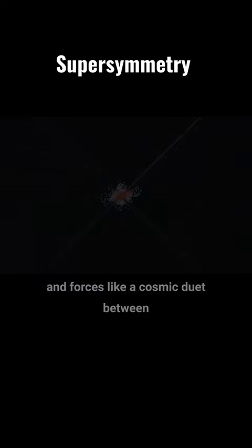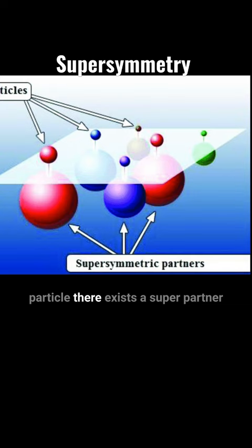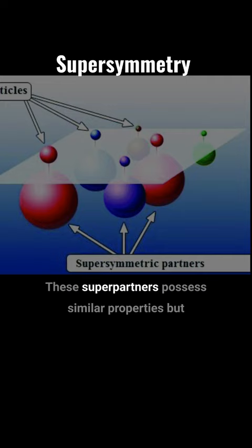Supersymmetry proposes that for every known particle, there exists a superpartner particle, balancing the cosmic equation. These superpartners possess similar properties but differ by their intrinsic spins.